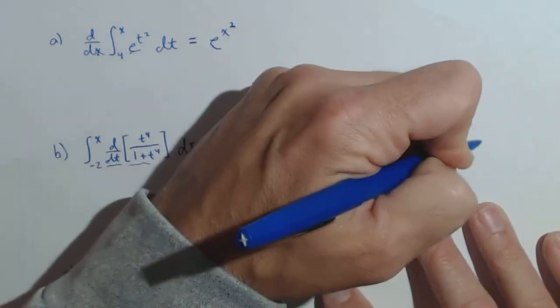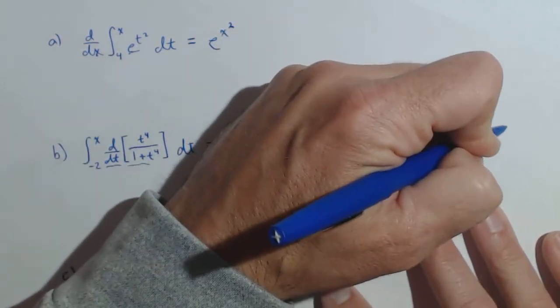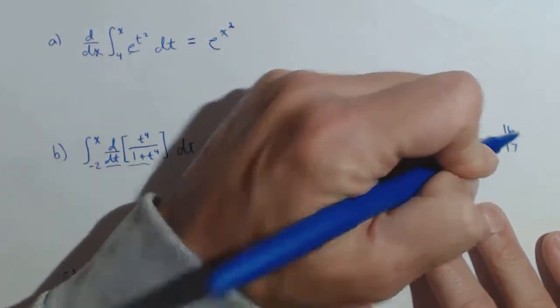and so we're gonna have, just simplifying just a little bit, we're not gonna worry about common denominators, x to the fourth over one plus x to the fourth, minus 16 seventeenths.